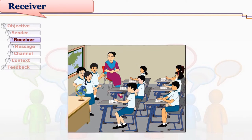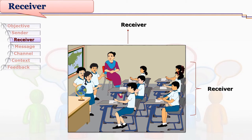Let's understand Tina's example. Tina and her two friends have prepared a topic — types of memory — assigned by their teacher, and now they are presenting to their class. Tina's group becomes the sender, and the entire class along with the teacher become the receivers. This is a situation where the teacher is also in the role of receiver instead of being in the role of sender.